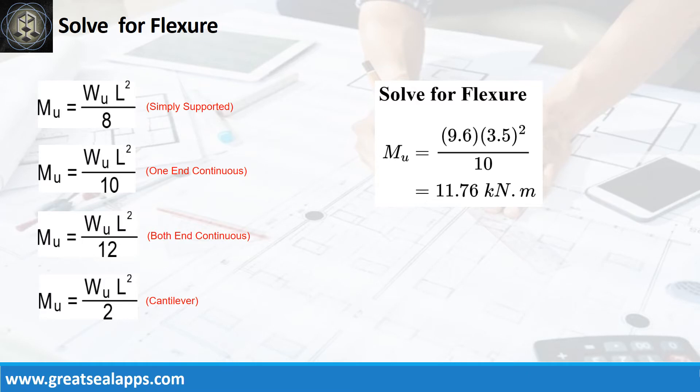Given factored load equals 9.6 kN per meter and L equals 3.5 meters, the maximum moment is 11.76 kN per meter.